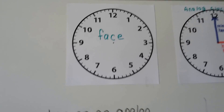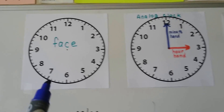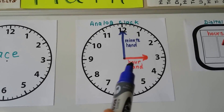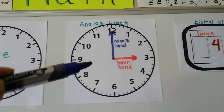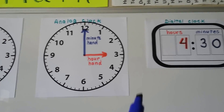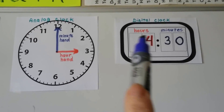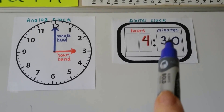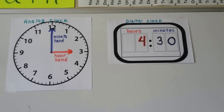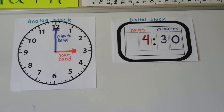The front of the clock is called its face. The short hand is the hour hand. The long hand is the minute hand. And on a digital clock, the hours are on the left side and the minutes are on the right side. This is analog and that's digital.